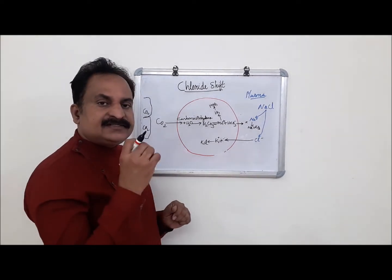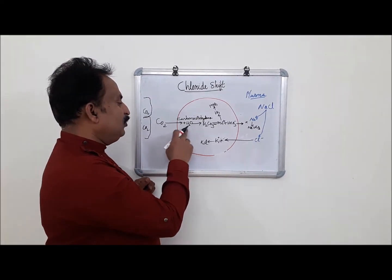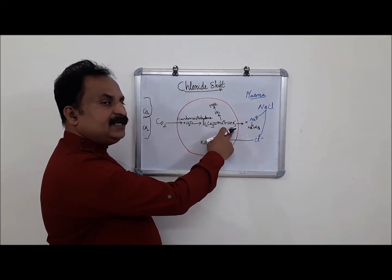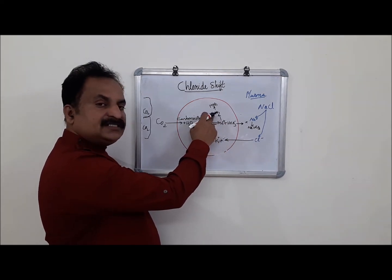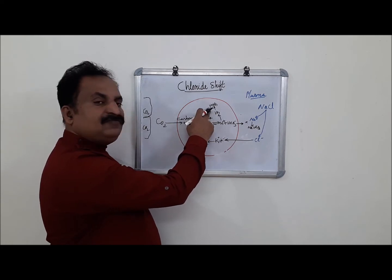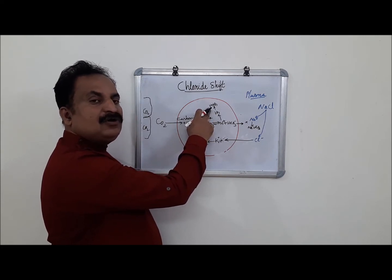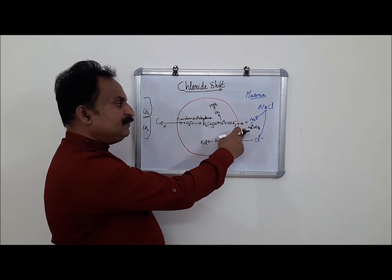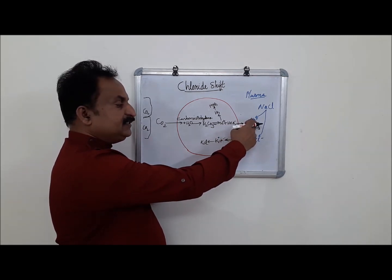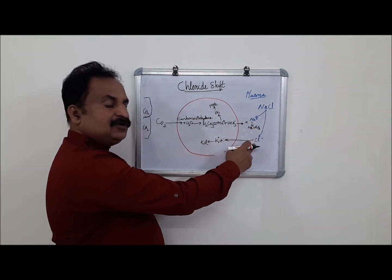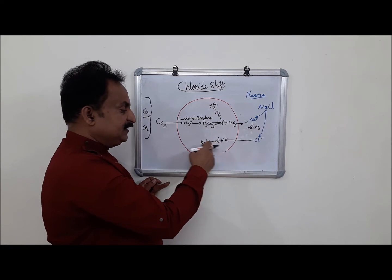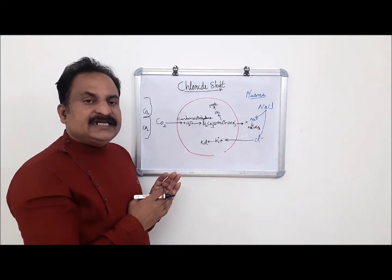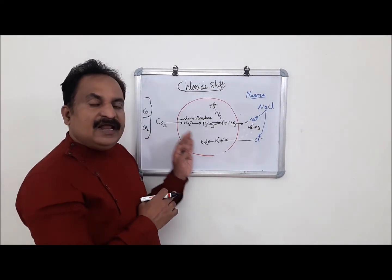Carbonic anhydrase is the fastest enzyme in the human body, which helps to form carbonic acid. Carbonic acid splits to form H+ and HCO3- ions. H+ ions combine with oxygen-free hemoglobin to form HHB, hemoglobinic acid. Then bicarbonate ions diffuse out from the RBC into plasma and combine with Na+ ions to form sodium bicarbonate. At the same time, a chloride ion shift occurs into the RBC, combining with potassium ions to form potassium chloride. This is how carbon dioxide transport from cells or tissues to lungs occurs.